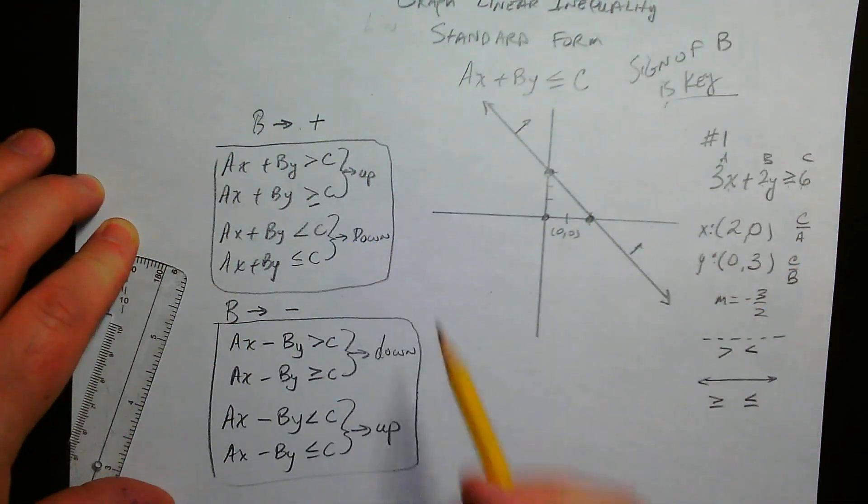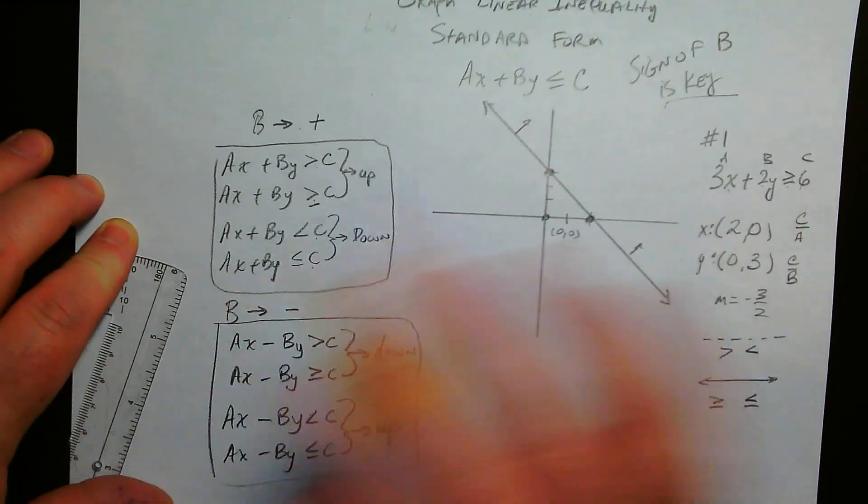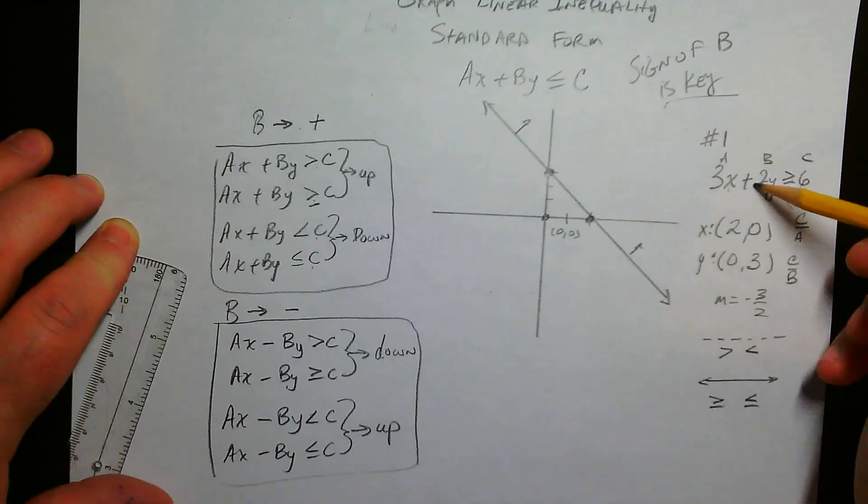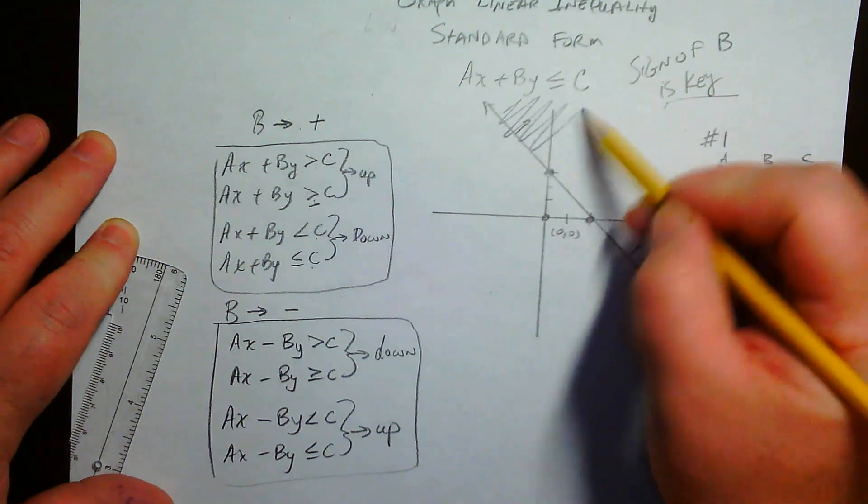If B is positive, it's pretty straightforward. If B is positive, then greater is up and less is down. No problem. Here, B is positive. See, it's positive too. So greater is up, so above the line.